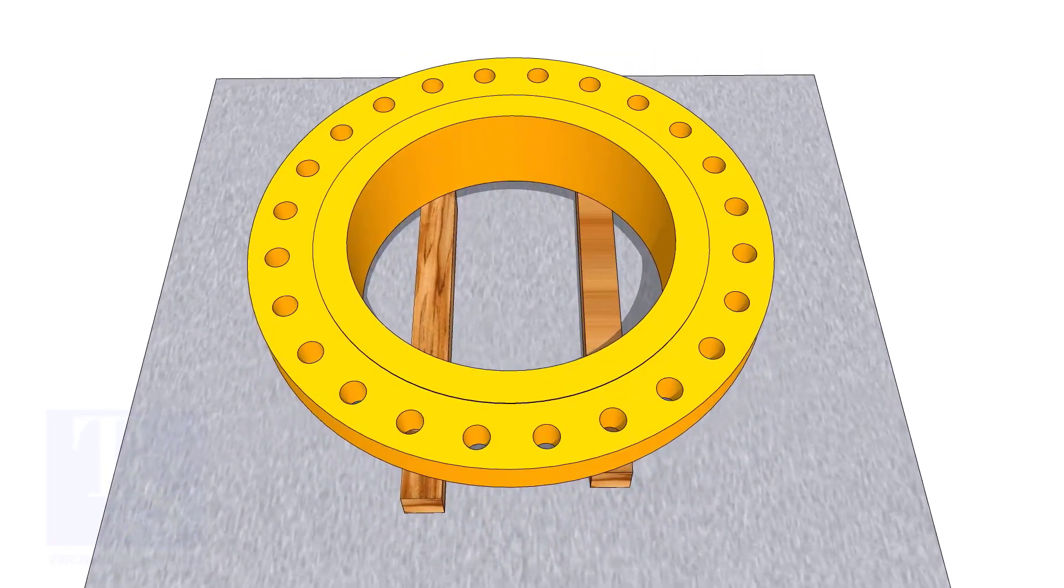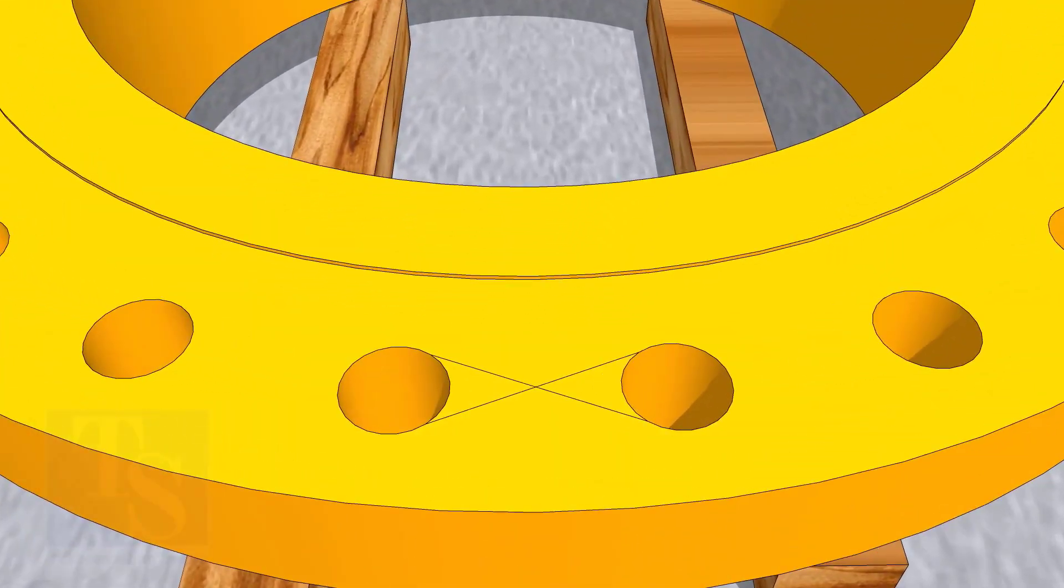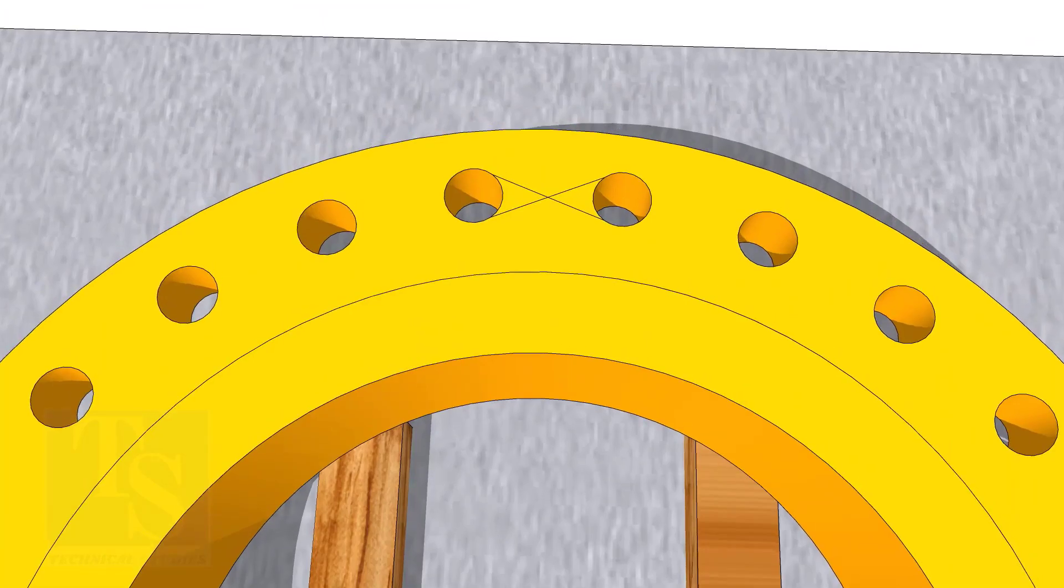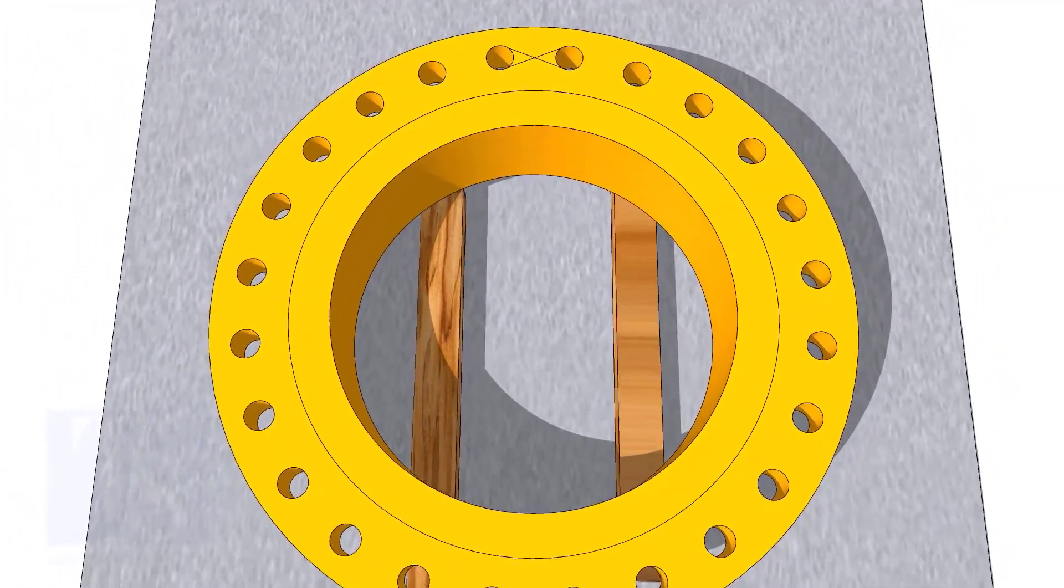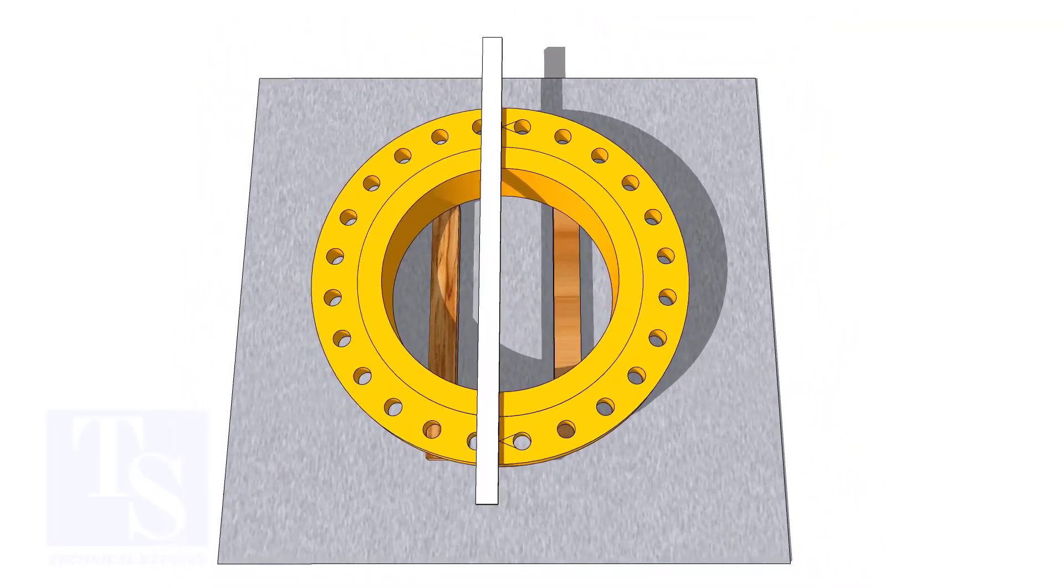In my previous videos, many times I had shown how to mark the center line of a flange. I am showing this scene again for the new viewers. Draw the center line of the flange, and transfer it to the sides, as shown.